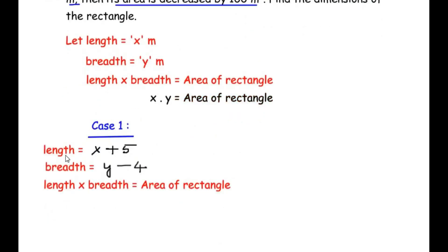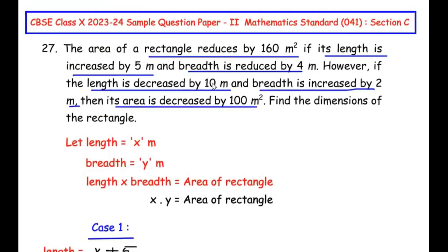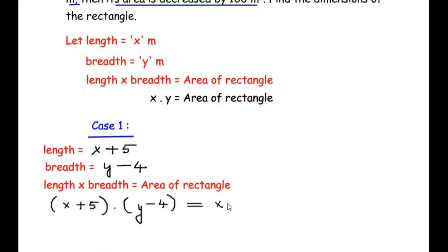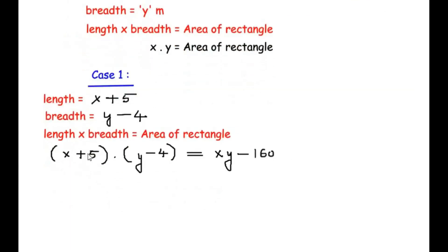The area of the rectangle is length times breadth, so we write (x + 5) multiplied with (y − 4) equal to the area of the rectangle. Since in case one the area is reduced by 160 square meters, the right-hand side becomes xy minus 160. Expanding the bracket: x times y is xy, x times −4 gives −4x, 5 times y gives +5y, and 5 times −4 gives −20.